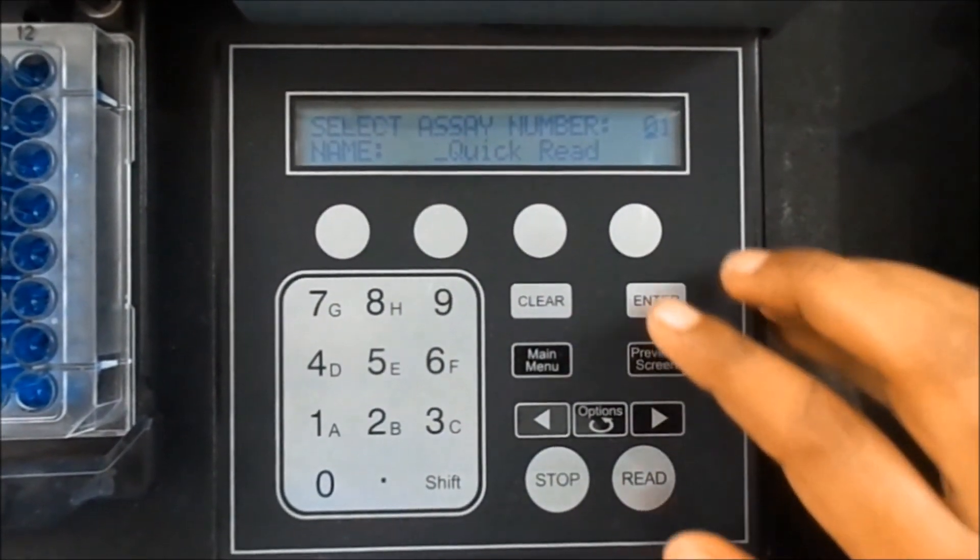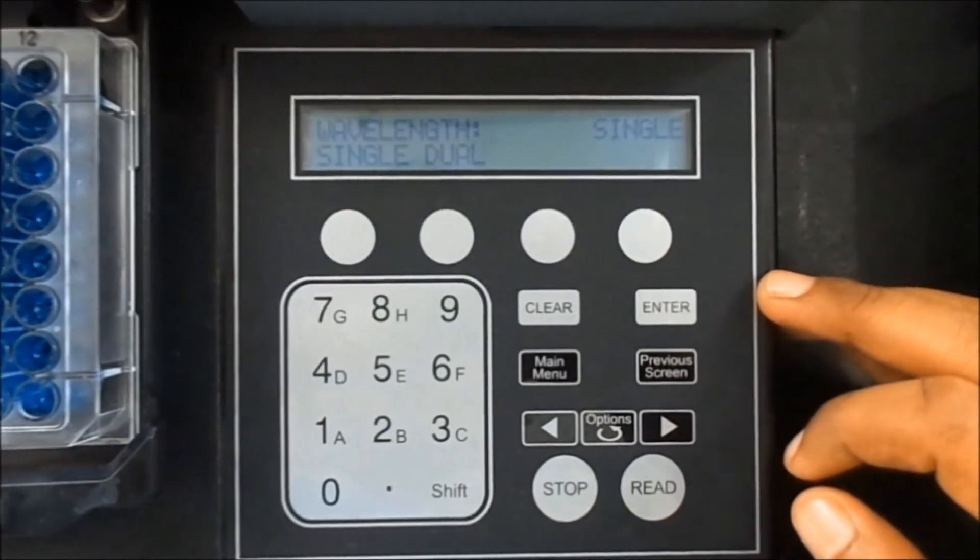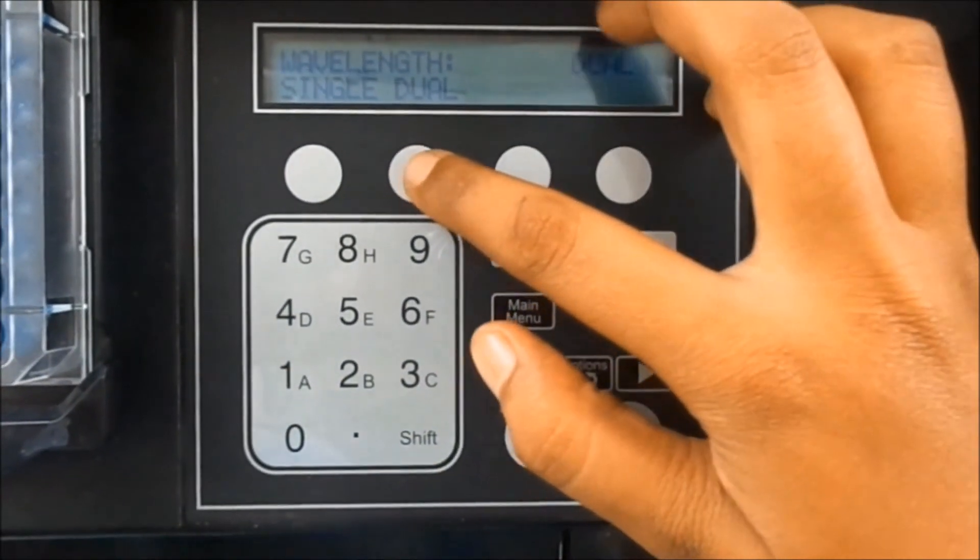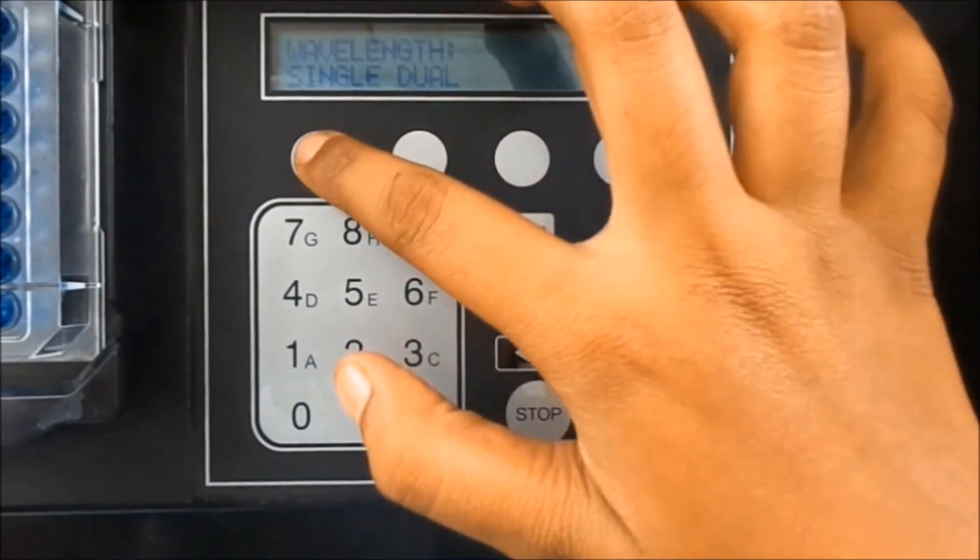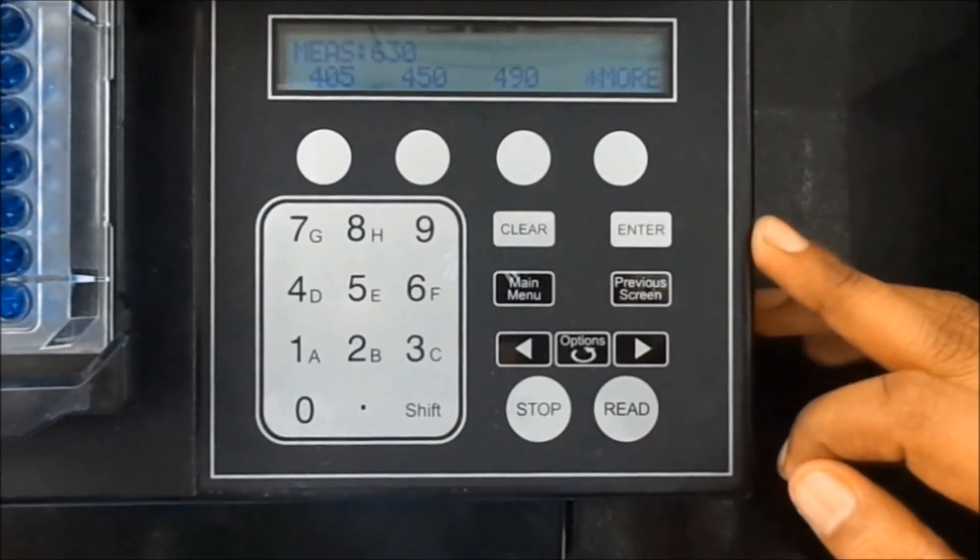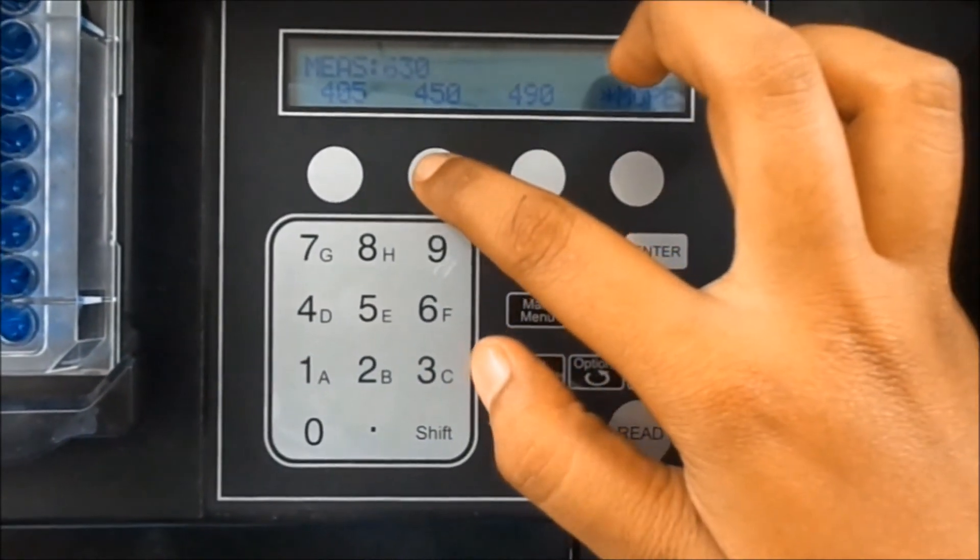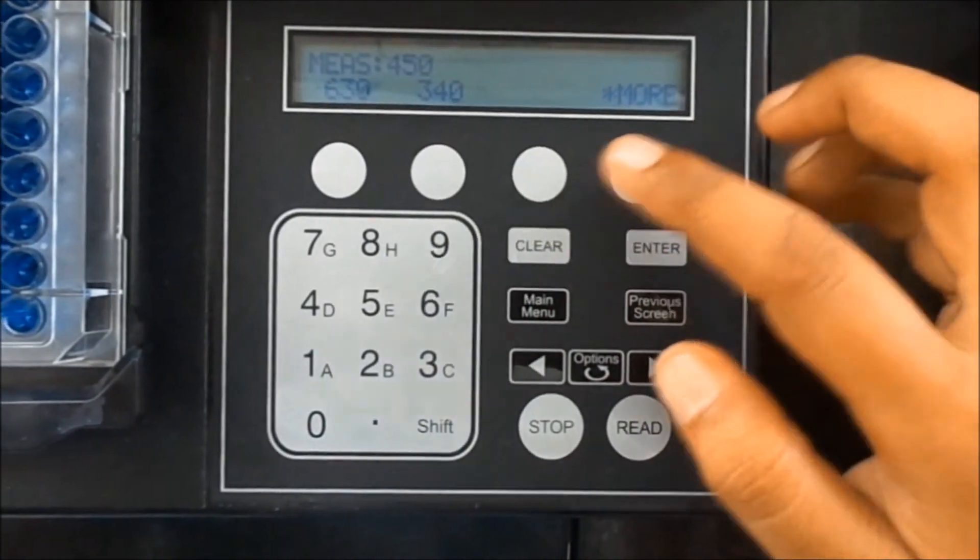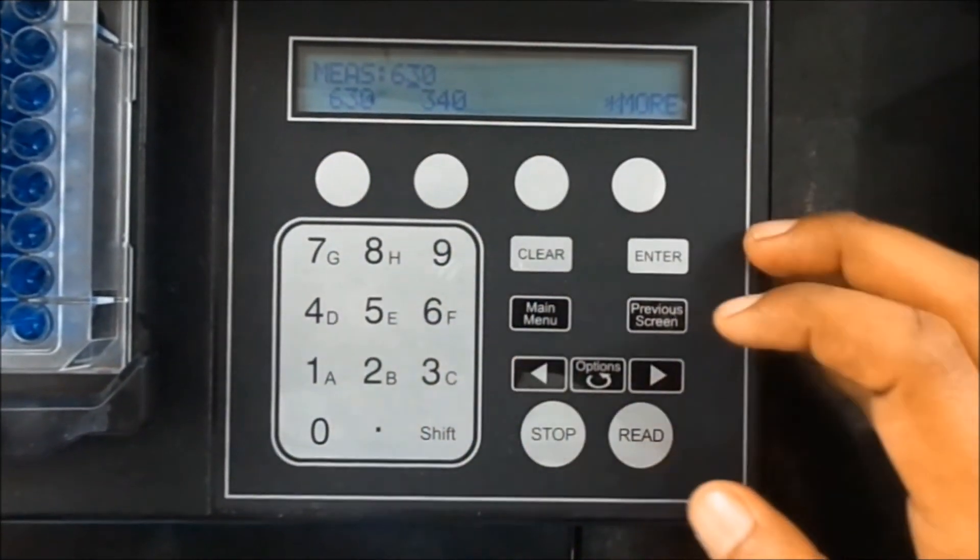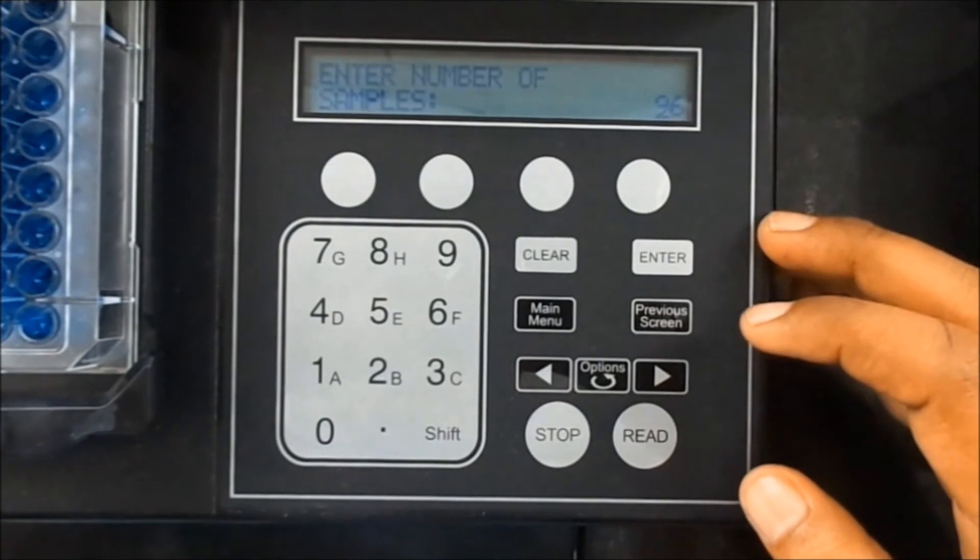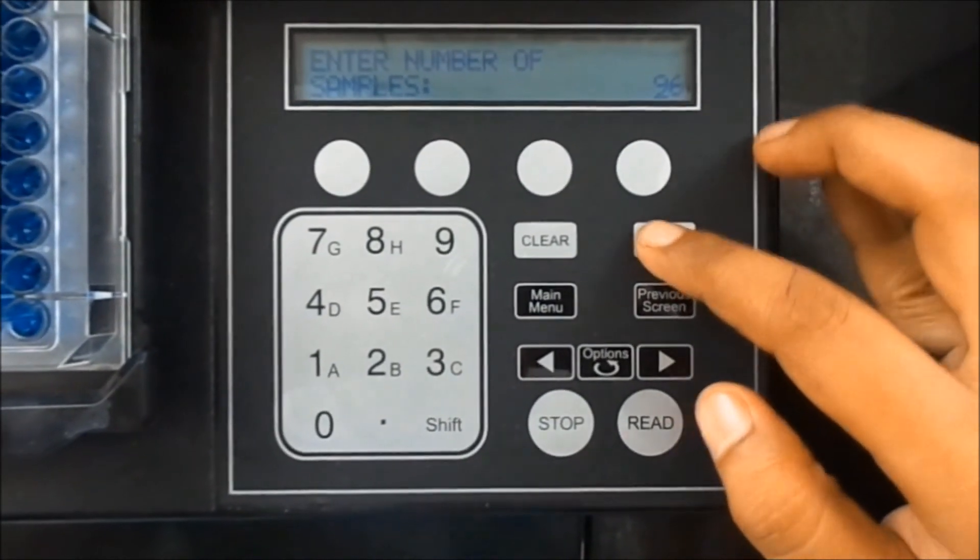Assay number is entered. The mode of wavelength is set accordingly as single or dual. The required wavelength is set. The number of samples are entered, and by default the number is 96.